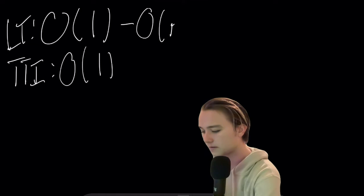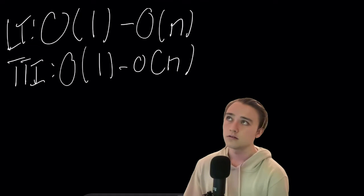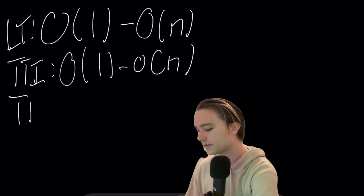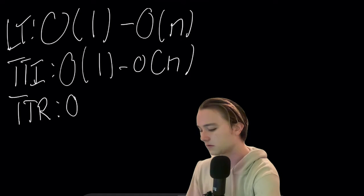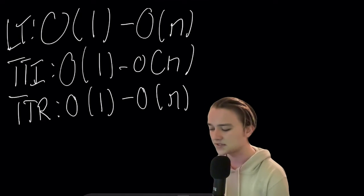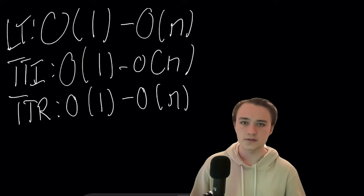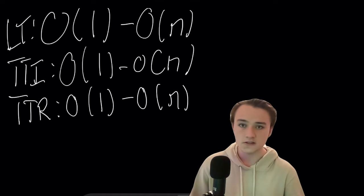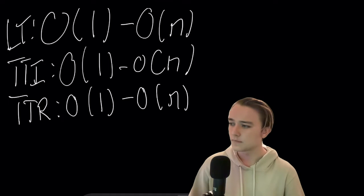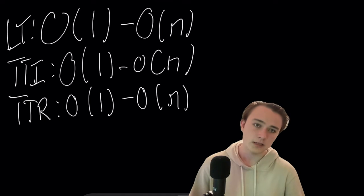So, we'll say O(1) to O(n). And then finally, time to remove, which we'll call TTR, is also going to be most of the time constant and worst case linear. And we'll explain why this is in a minute, but one of the first things to notice about this, and the reason it is such a popular data structure, is because there are few data structures, if any others, which have these same properties. Constant insertion, constant lookup, and constant removal is extremely rare.